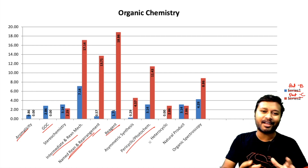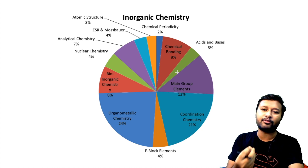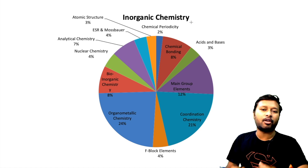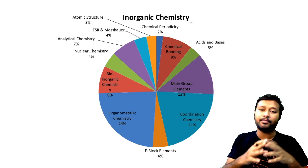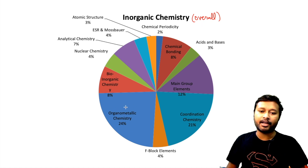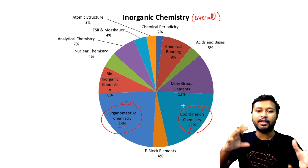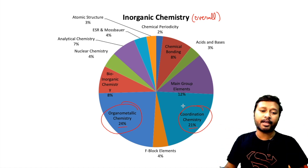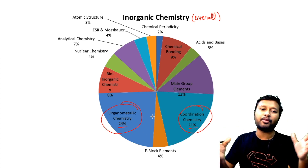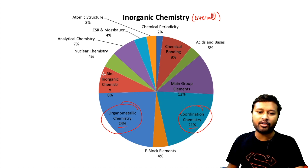For organic chemistry, the blue bars are Part B and red bars are Part C. Certain topics like aromaticity and general organic chemistry are generally asked only in two-mark questions, while name reactions, rearrangements, heterocyclic compounds, and natural products are mostly asked in Part C four-mark questions. The more important high-weightage topics are reagents, name reactions and rearrangements, intermediates and reaction mechanisms, and pericyclic and photochemistry.